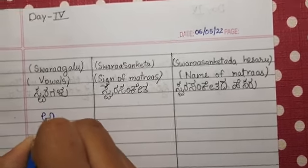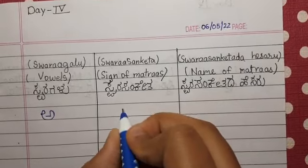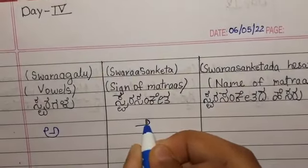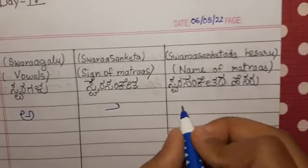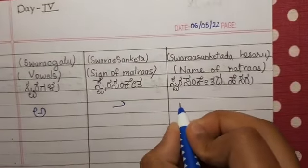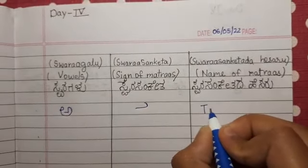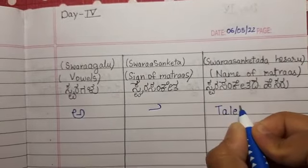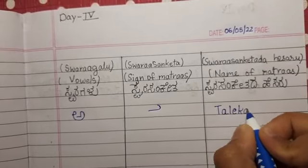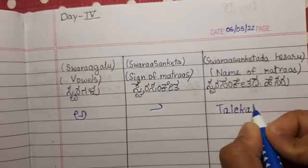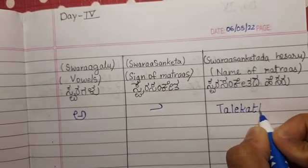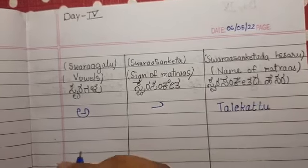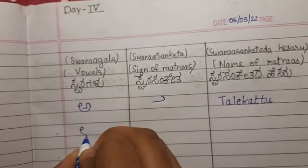A. A is equals to Talikattu. Matra of A is Talikattu.